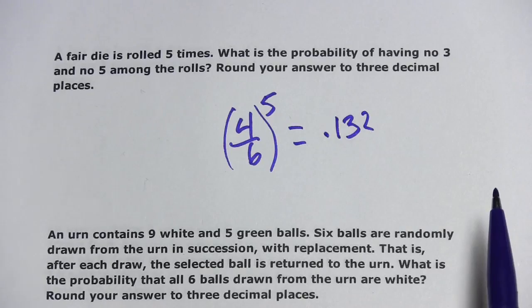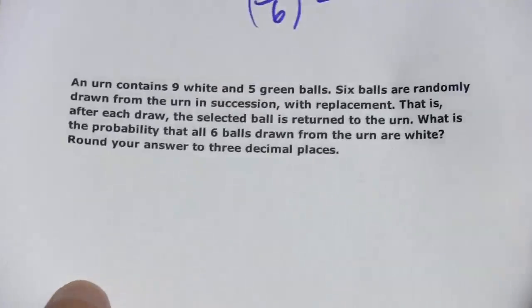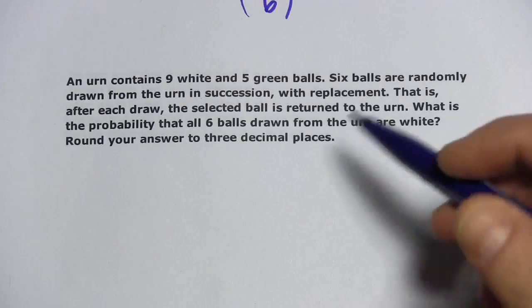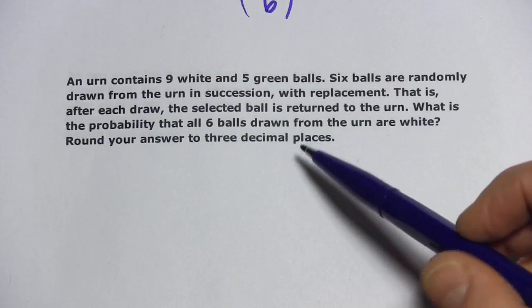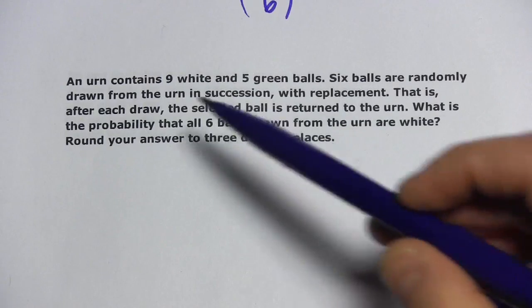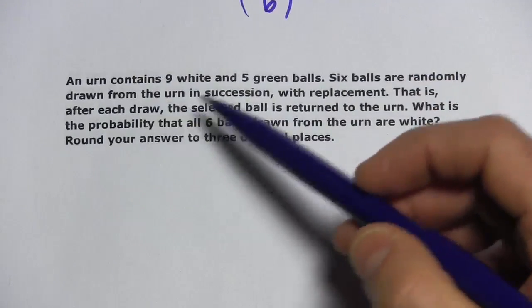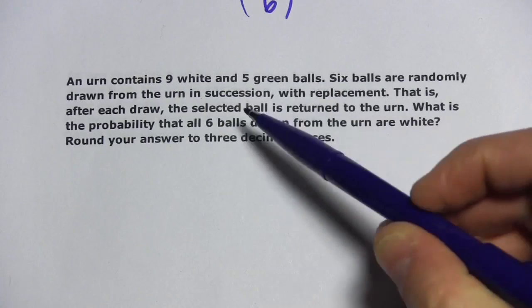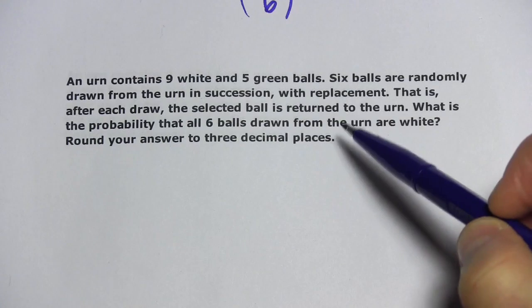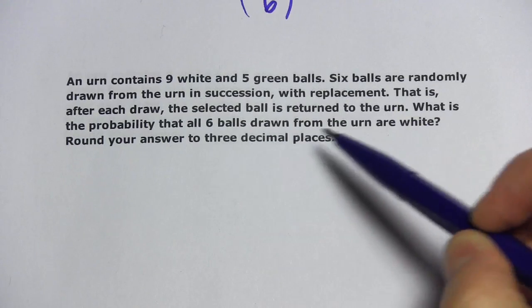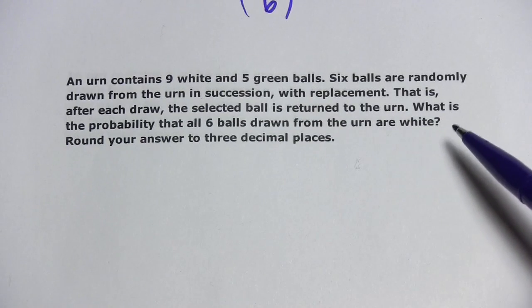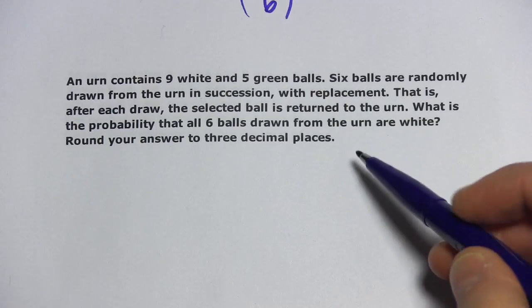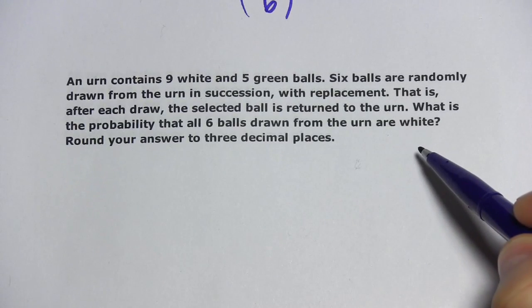Alright, let's try one more. This is a problem where we're actually pulling balls out of an urn. An urn contains nine white and five green balls. Six balls are randomly drawn from the urn in succession with replacement—that is, after each draw the selected ball is returned to the urn. What is the probability that all six balls drawn from the urn are white?